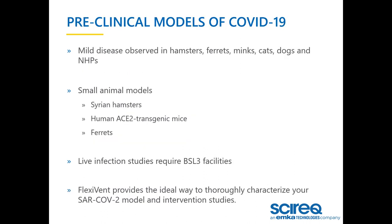SARS-CoV-2 is known to cause mild infections in several species. Current proposed preclinical models are the Syrian hamster, human ACE2 expressing transgenic mouse models, and ferrets. Live virus studies require BSL-3 laboratory facilities, and the FLEX event provides the ideal way to thoroughly characterize these preclinical models of COVID-19.